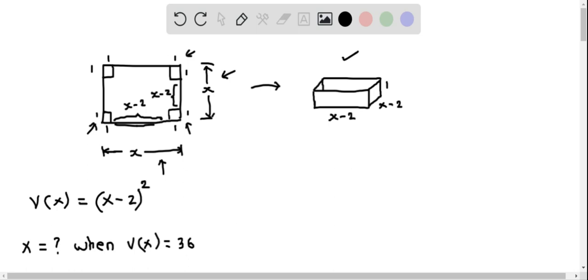Therefore, this side length will become x-2, and similarly, the other side length which will become the width of the box will also be x-2. And then this side length of 1 foot will become the height of the box.